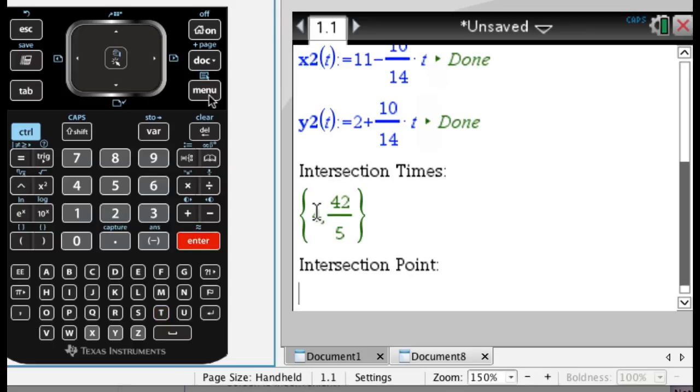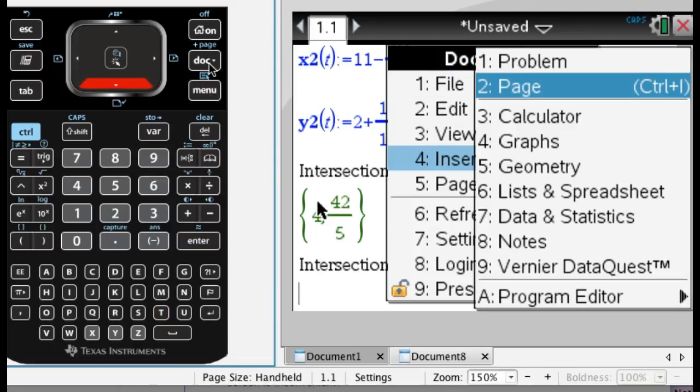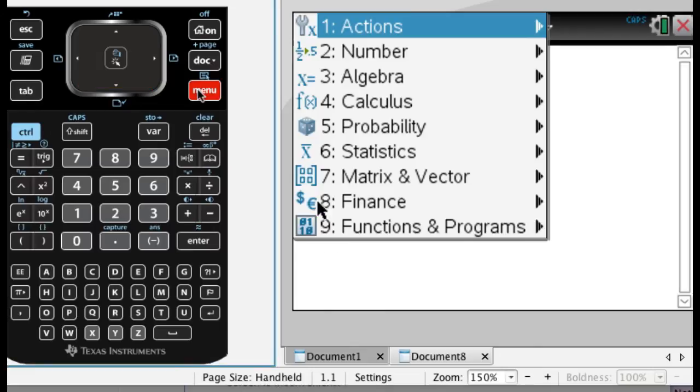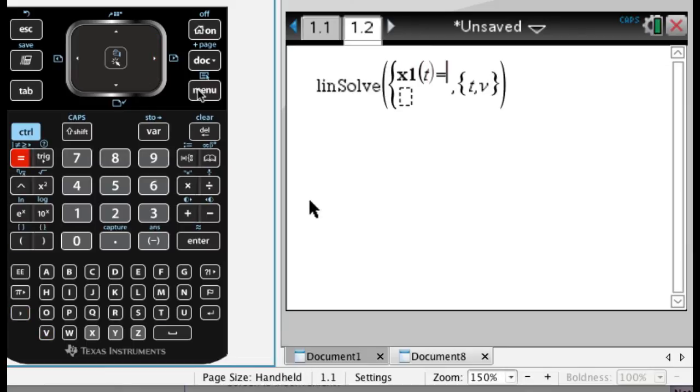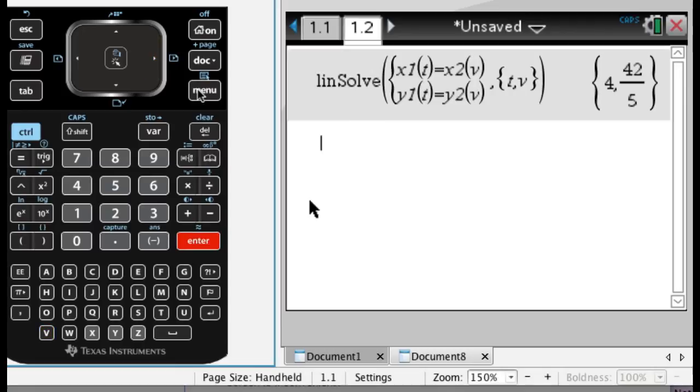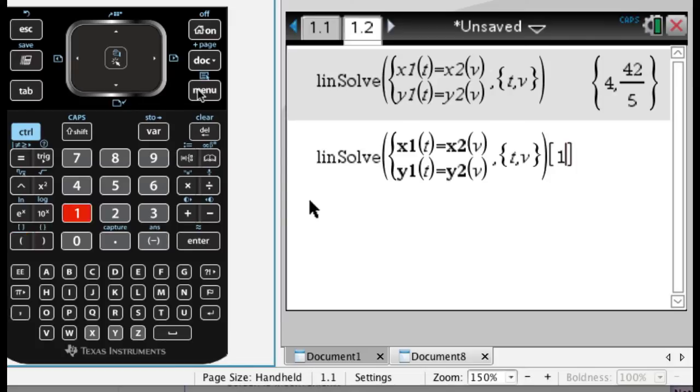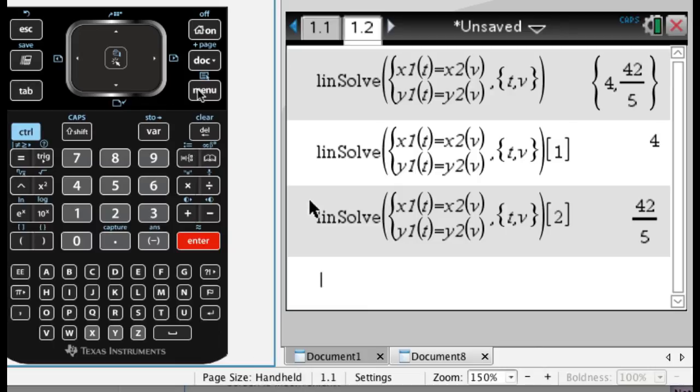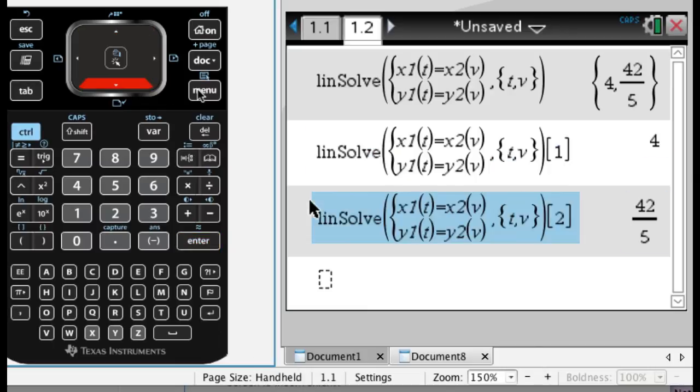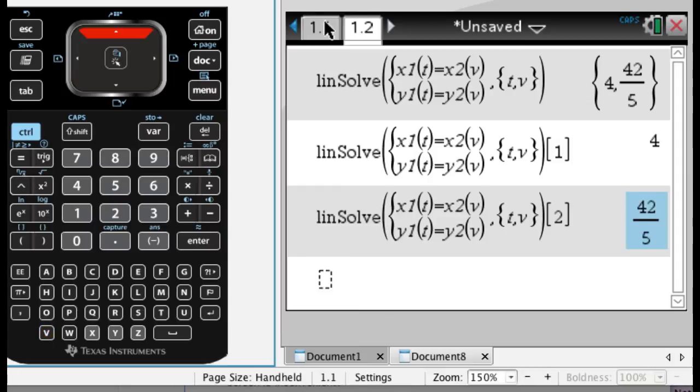So what I want to do there, I'm going to do something a little strange. Let me insert a calculator page and show you something. If I solve a system of linear equations, t and v, so x1(t) equals x2(v) and y1(t) equals y2(v) like that, if I do that and I just put, so it looks like you're putting a vector after it but I'm just going to say [1], what this will do is it peels off that first answer so I just get the 4. And then if I do [2] it just peels off the second answer so I'm going to take advantage of that and try to use it. I'm hoping this works. Copy and paste would be awesome here but it's not working.